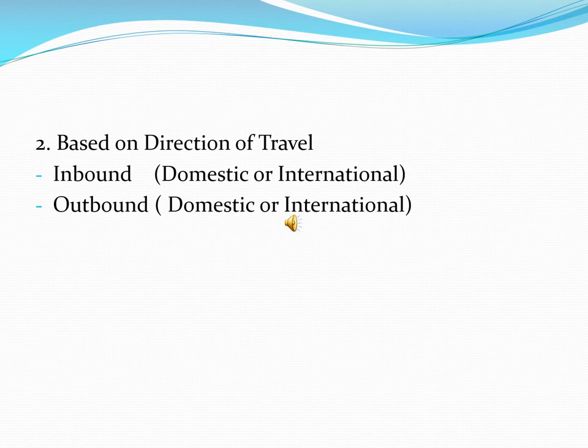The second is outbound tourism, which has a centrifugal force — pushing out or sending tourists away. Outbound domestic tourism is people from your state or city going outward to other cities or states. Outbound international tourism is when people from your country cross national boundaries and move to other countries — for example, people from India going to Spain, France, the United Kingdom, or the Americas.